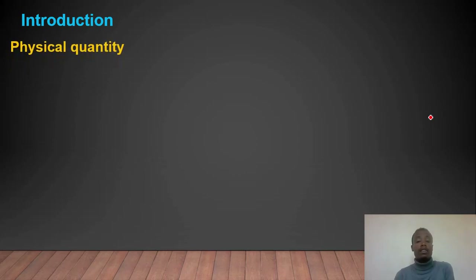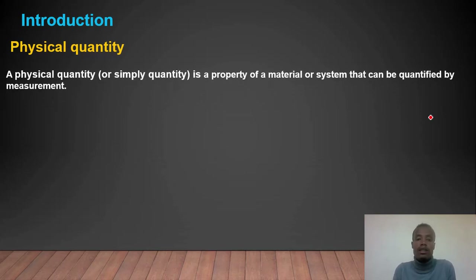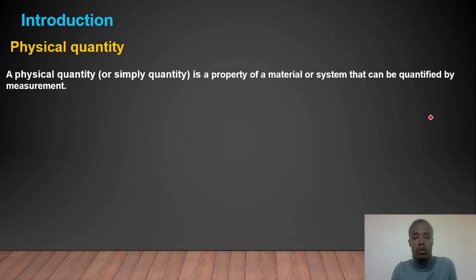The introduction covers Vector and Types of Vector. A physical quantity is simply called a quantity. What is a physical quantity? Physical quantity is a property of a material or system that can be quantified by measurement — that is, expressed in a measurable unit.